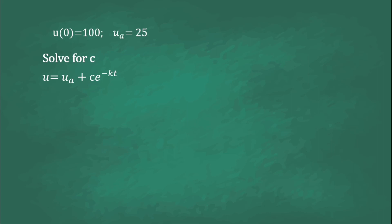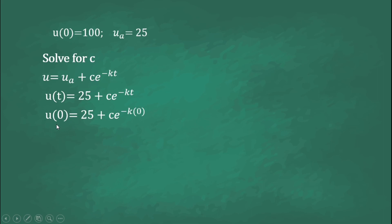Since it is given in the problem that u(0) equals 100 and u sub a equals 25, we can solve for C using the equation u equals u sub a plus Ce raised to negative kt. So u(t) equals 25 plus Ce raised to negative kt, substituting the value of u sub a. Setting t equal to zero, u(0) equals 25 plus Ce raised to zero. Since u(0) equals 100, we get 100 equals 25 plus C, and therefore C equals 75.